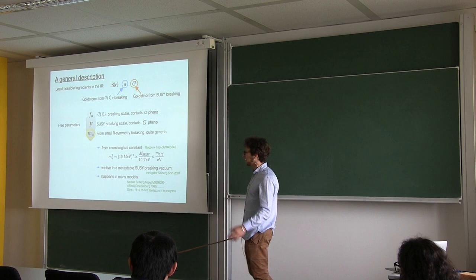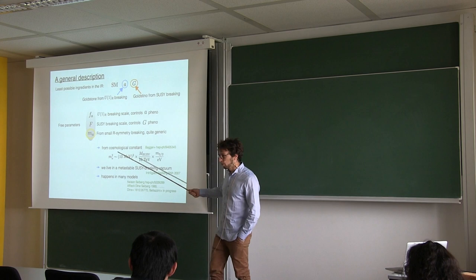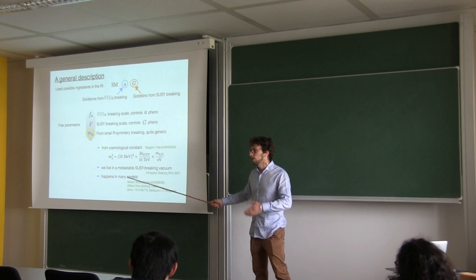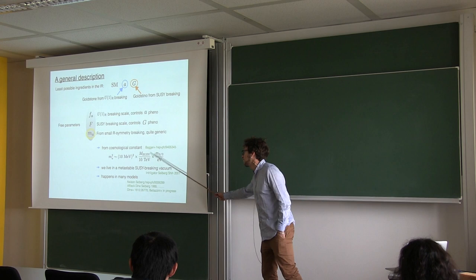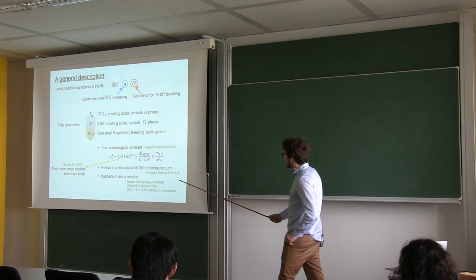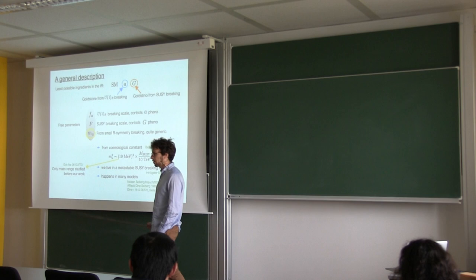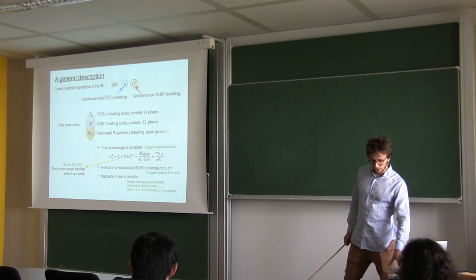As I told you, one can have a mass for the R-axion, a small mass, in other constructions like metastable supersymmetry breaking. It has shown to happen in some explicit models of SUSY breaking—they provide a mass, sometimes small, sometimes large, for the R-axion. So far, this one is the only mass range that has been studied about the R-axion, by this paper by Goh and Ibe in 2008. And then, to our knowledge, nobody else has studied the phenomenology of this particle. And studying the phenomenology of this particle is what we did in this paper.